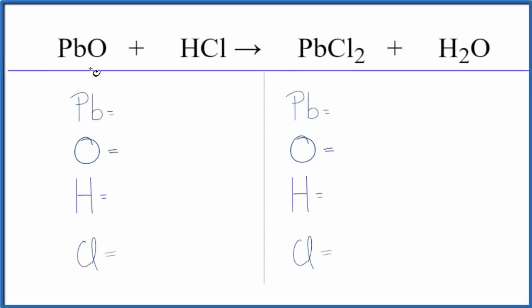To balance this equation, PbO plus HCl, that's lead 2 oxide plus hydrochloric acid, let's count the atoms up on each side of the equation.